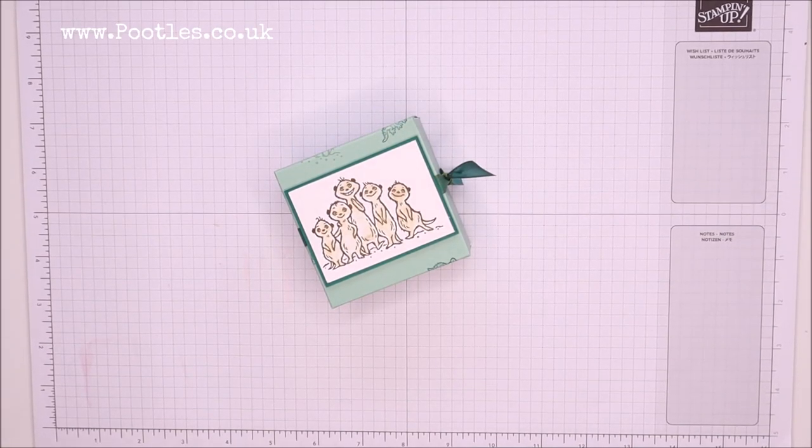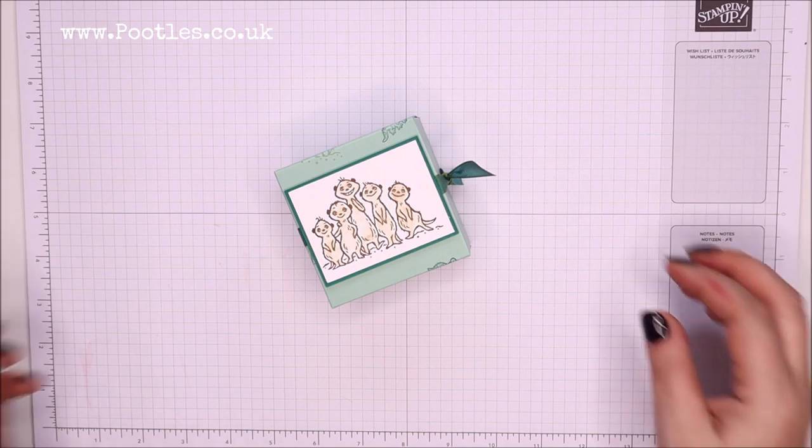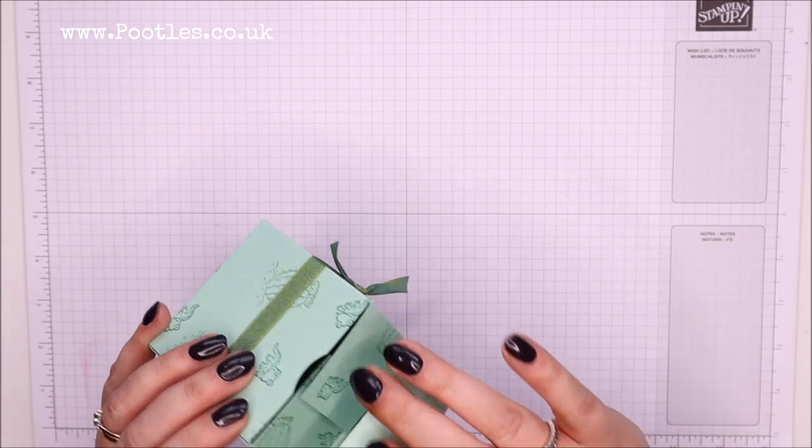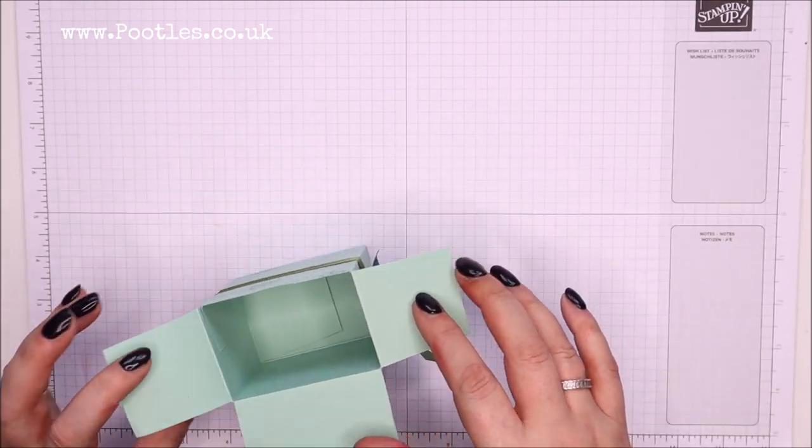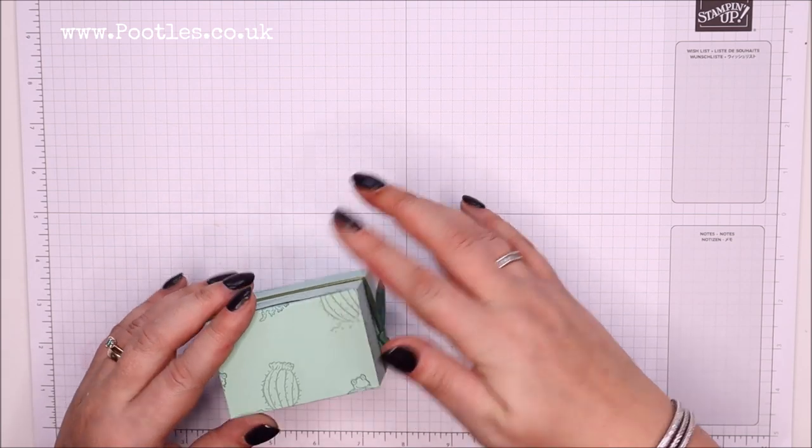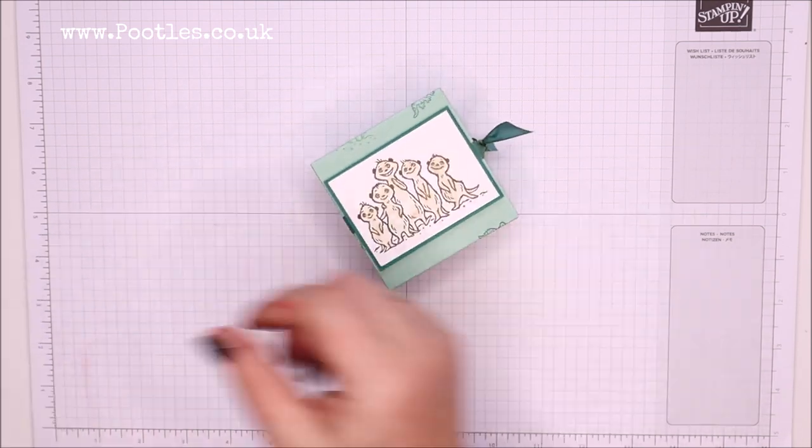Hi there, it's Sam from Poodles.co.uk. Thank you very much for joining me today. Today's project is this one, it's a little box with a lid that you can open. And I thought this would be great for guys because there's no pink, no flowers, and no bows.